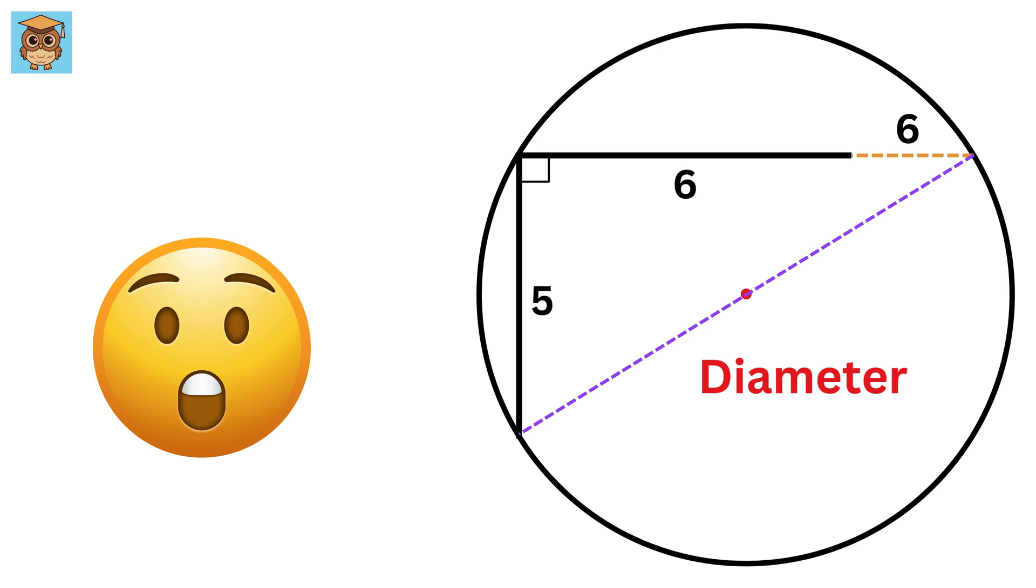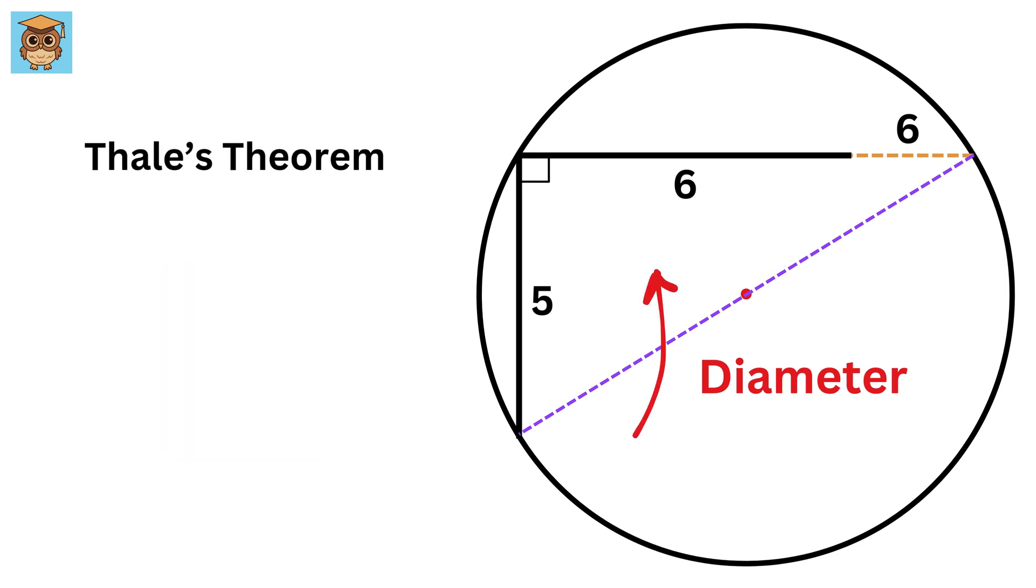This is because of Thales' theorem, which states that if you draw a triangle where one of its sides is the diameter of a circle, then the angle opposite that side is a right angle.